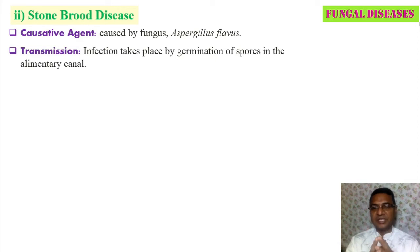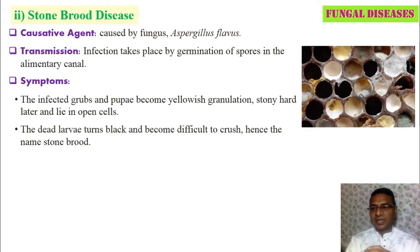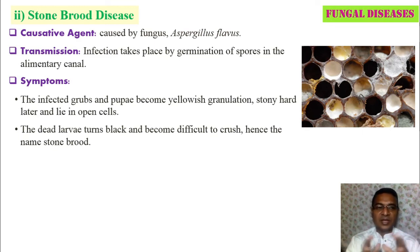Stone brood disease is transmitted by germination of spores in the alimentary canal — the gut region. The symptoms: infected grubs and pupae become yellowish, with granular, stony-hard texture, lying in open cells. The color pattern changes to granular yellowish; when touched, hardness is observed. The dead larvae turn black, become difficult to crush, and hence the name stone brood.